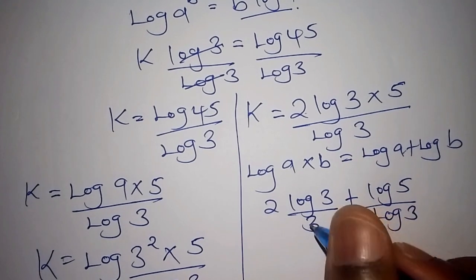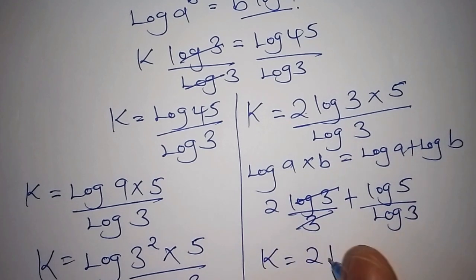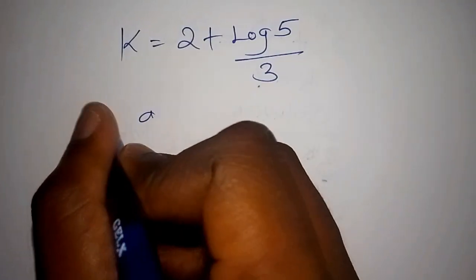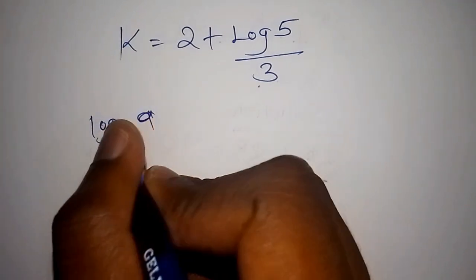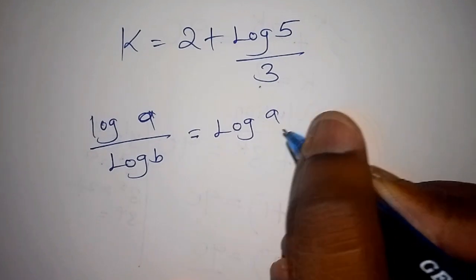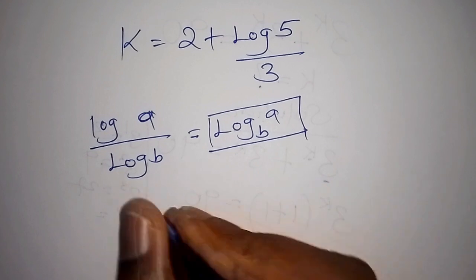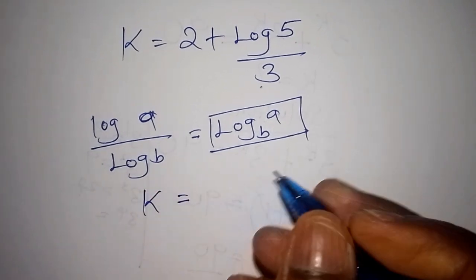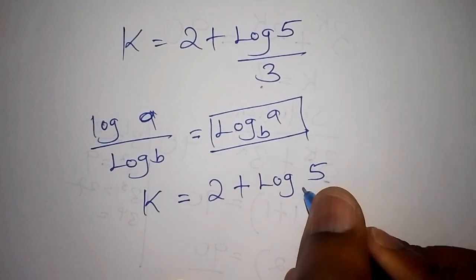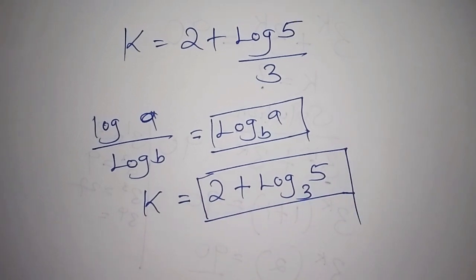Cancelling log(3) in the first term, k = 2 + log(5)/log(3). Using the change of base rule — log(a)/log(b) = log base b of a — we get k = 2 + log₃(5). That is our value of k.